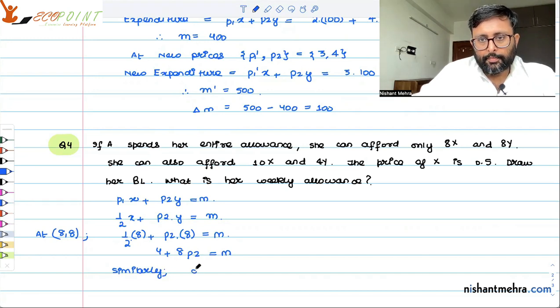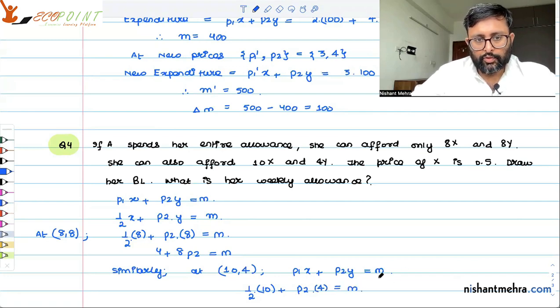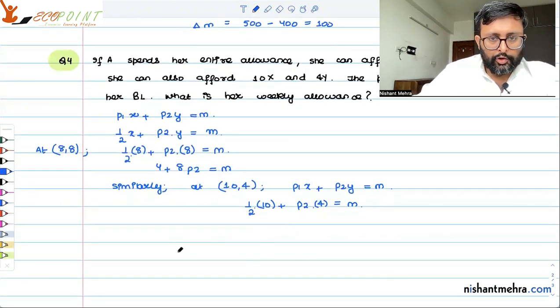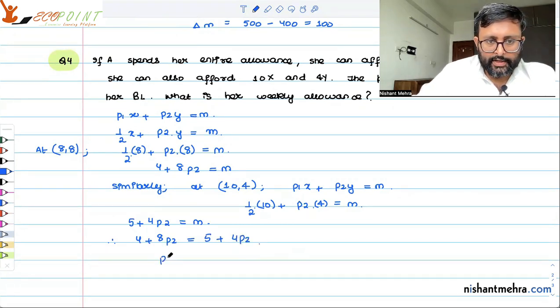She can also afford 10, 4. So the budget line is P1X plus P2Y equals to M. So P1 is 0.5, X is 10, P2 is P2, Y is 4, income is M. Once you calculate this, you will be getting 5 plus 4P2 equals to M. Now since income is same, therefore these two are same. 4 plus 8P2 equals 5 plus 4P2. Once you calculate this, you will be getting P2 equals to 1/4.